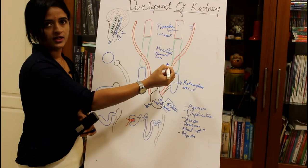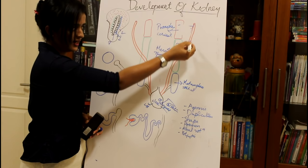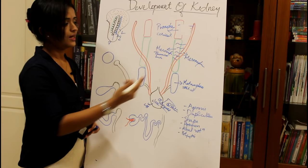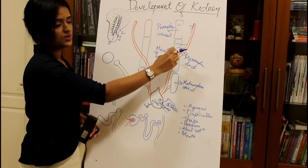Then we have the mesonephric part of the nephrogenic cord, which gives rise to many ductules joining with the duct of the pronephros. At this period, the pronephric duct is renamed the mesonephric duct. The mesonephric duct again opens into the urinary bladder, as it is the same duct as the pronephric duct, giving us mesonephric tubules and the mesonephric duct.